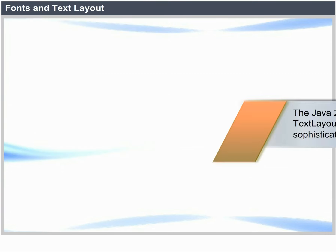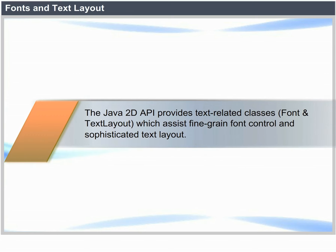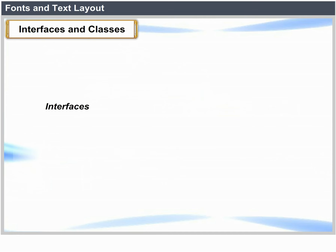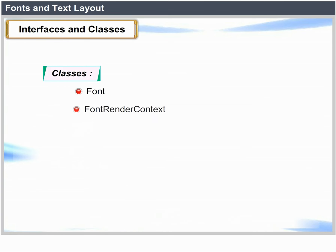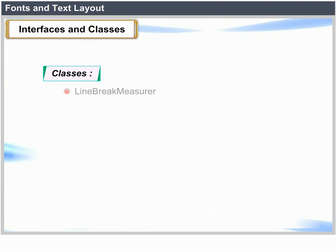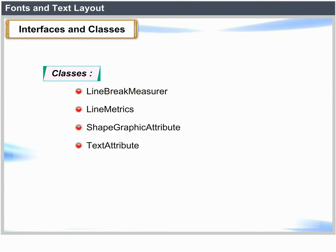Fonts and Text Layout: The Java 2D API provides text-related classes — Font and TextLayout — which assist fine-grained, font-controlled and sophisticated text layout. Interfaces: MultipleMaster, OpenType. Classes include Font, FontRenderContext, GlyphJustificationInfo, GlyphMetrics, GlyphVector, GraphicAttribute, ImageGraphicAttribute, LineBreakMeasurer, LineMetrics, ShapeGraphicAttribute, TextAttribute, TextHitInfo, and TextLayout.